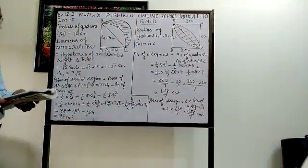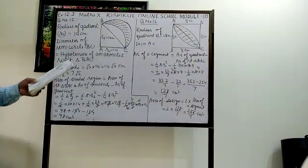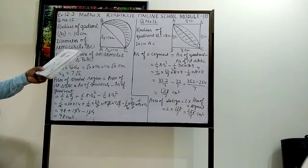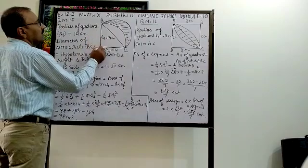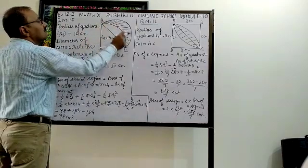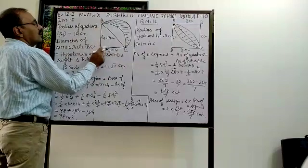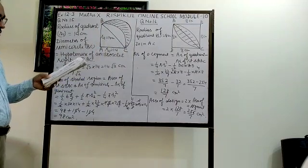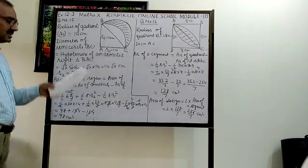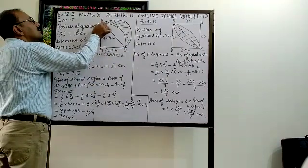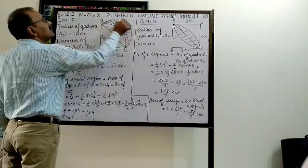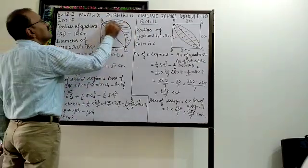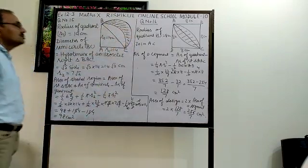Question number 15 is: in the figure, ABC is a quadrant of a circle of radius 14 cm. A semicircle is drawn with BC as diameter. BC is the diameter of the semicircle. Find the area of the shaded region.